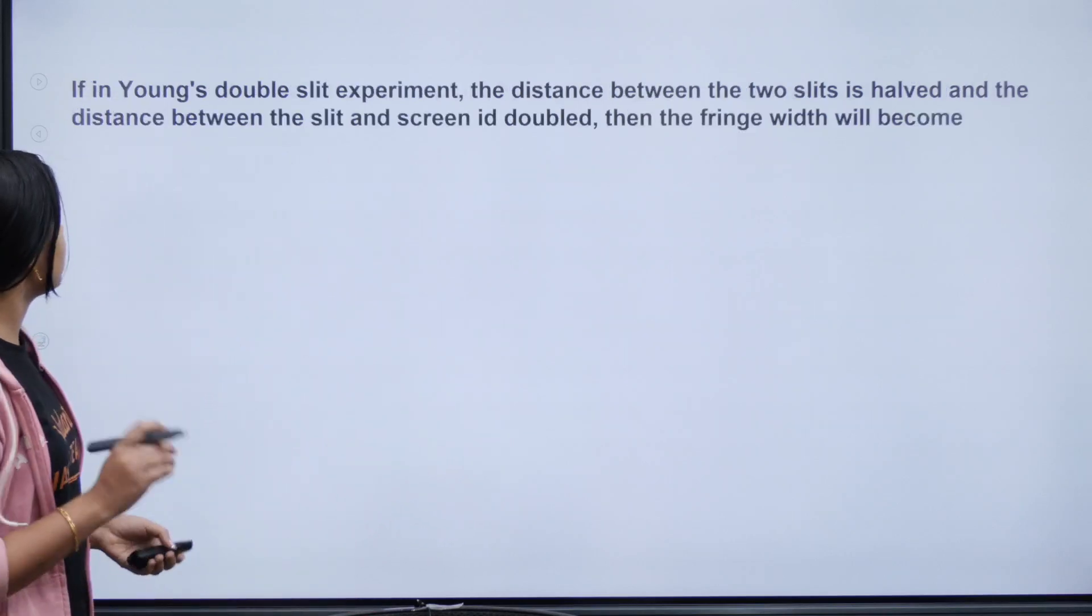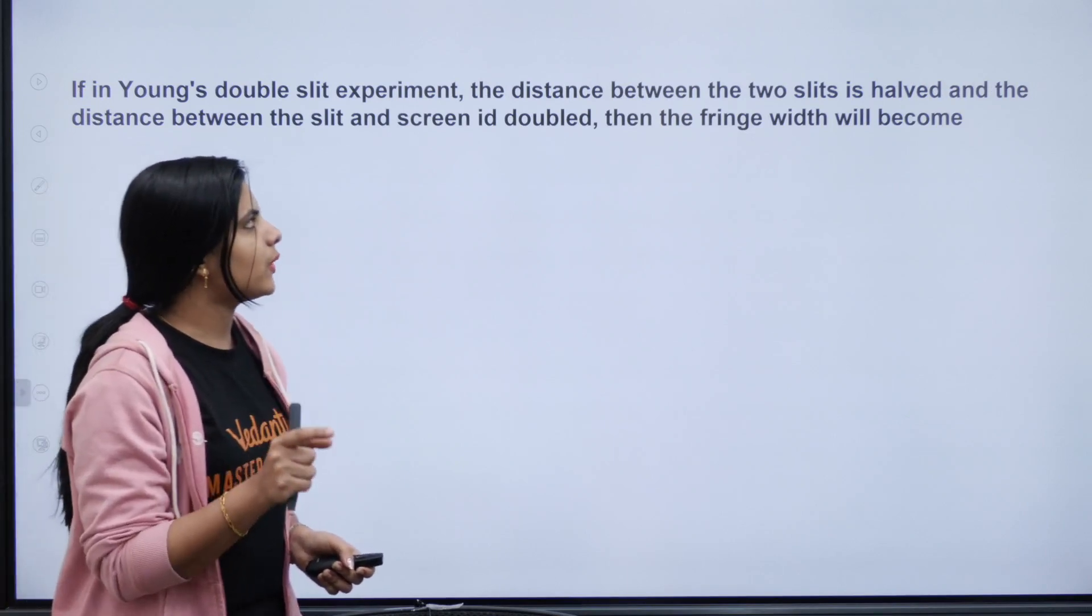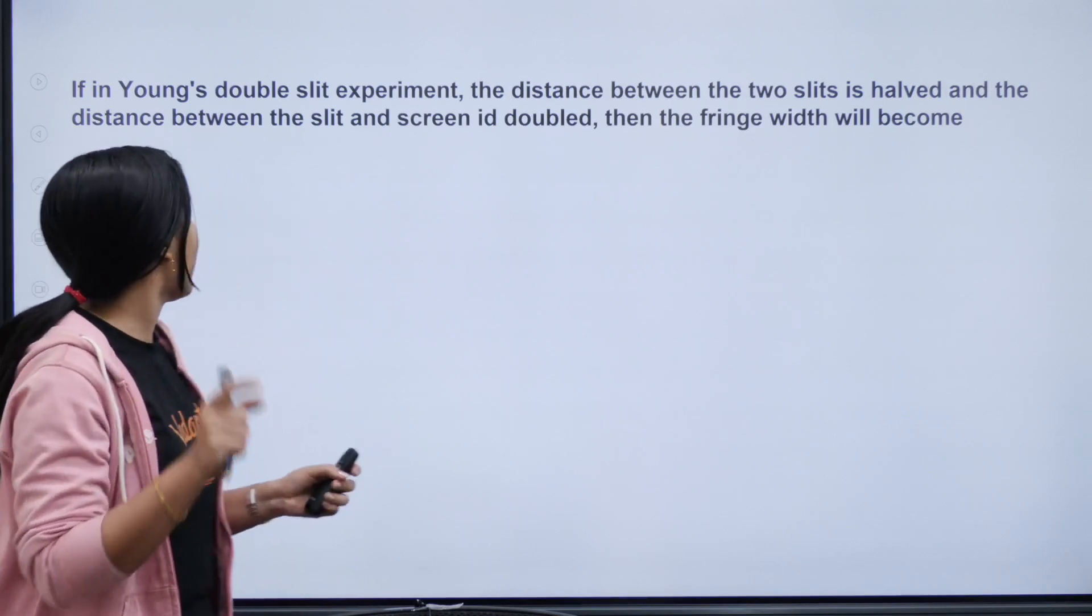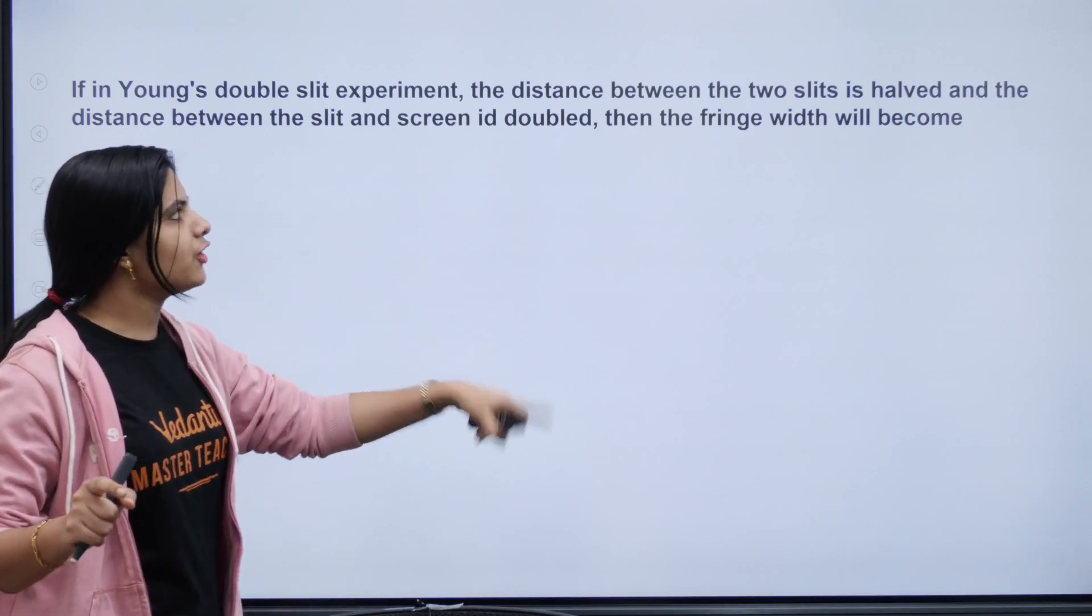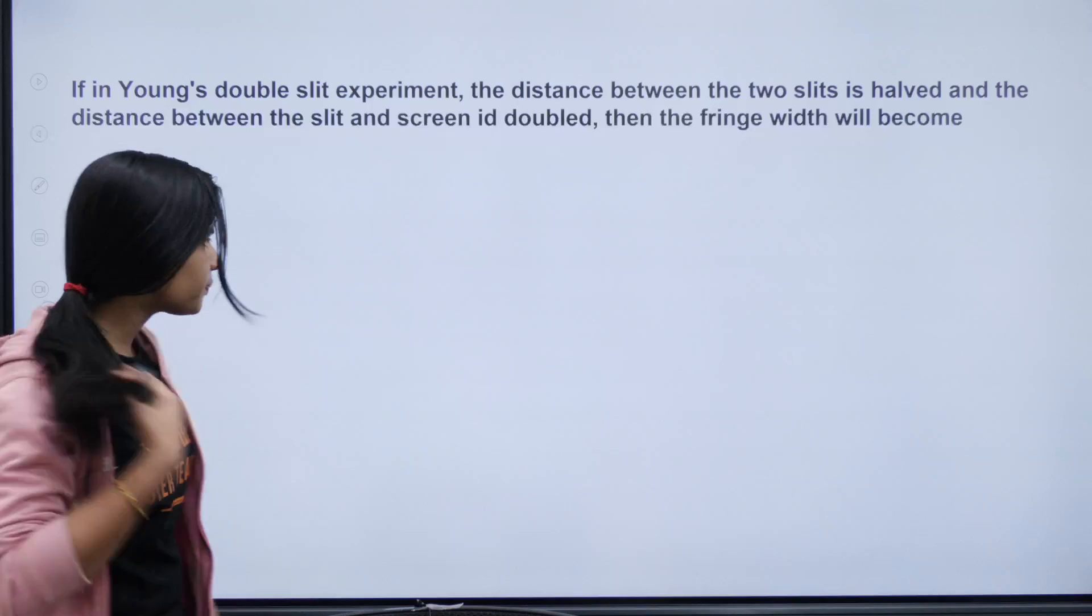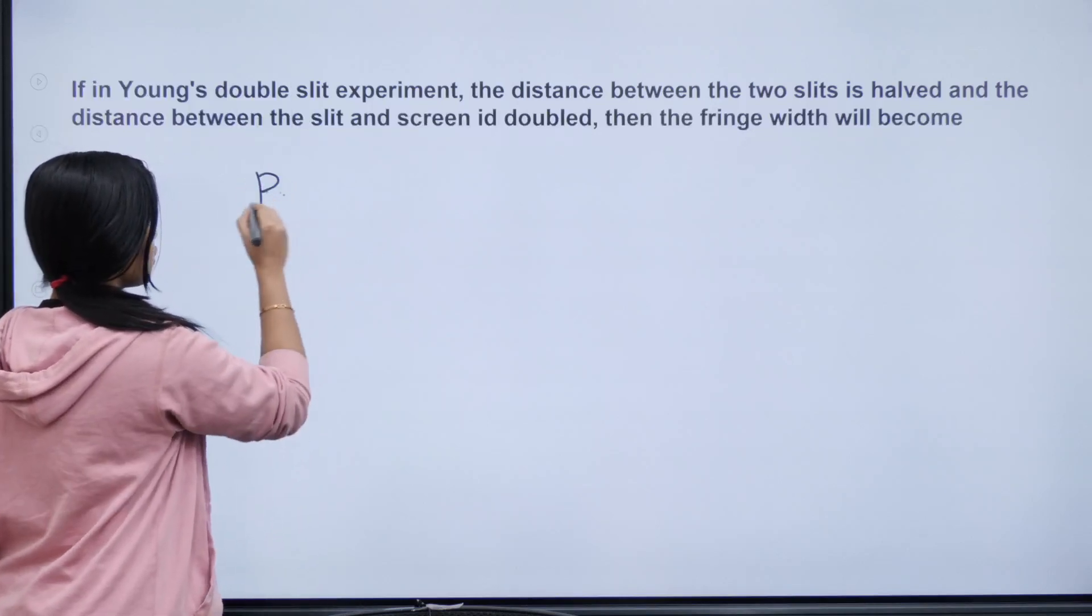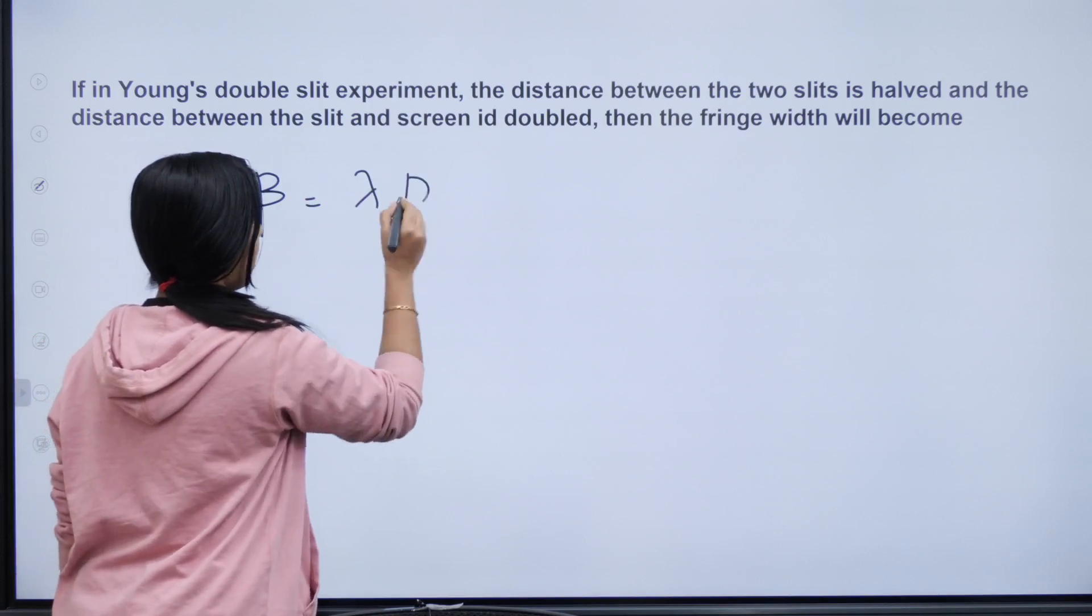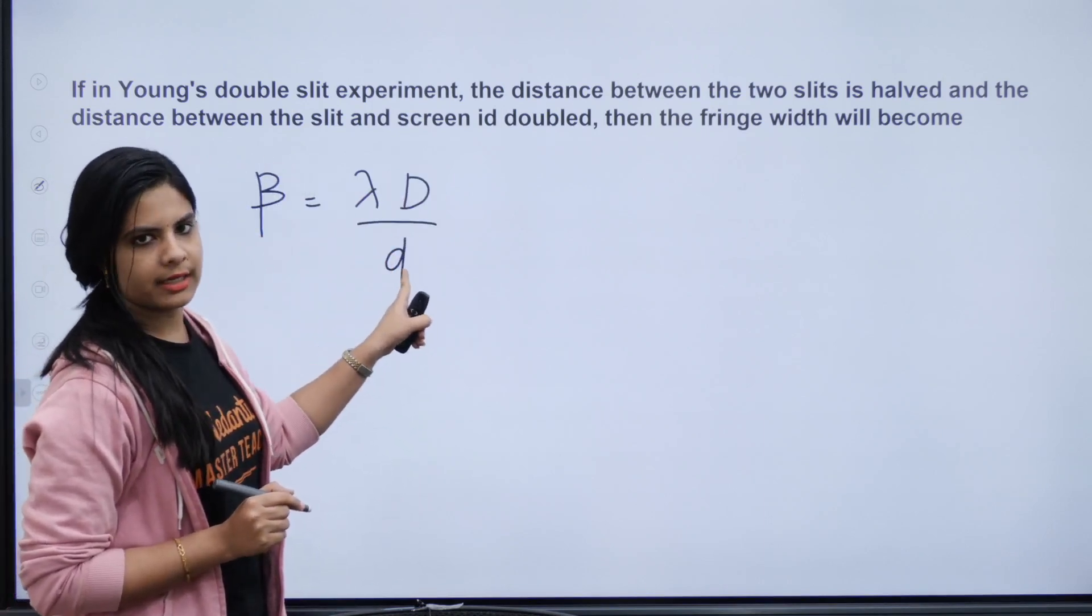Now next, we have a question. If in Young's double slit experiment the distance between the two slits is halved and the distance between the slit and the screen is doubled, then the fringe width will become what? The equation for fringe width is equal to lambda D divided by d, where d is the slit separation.